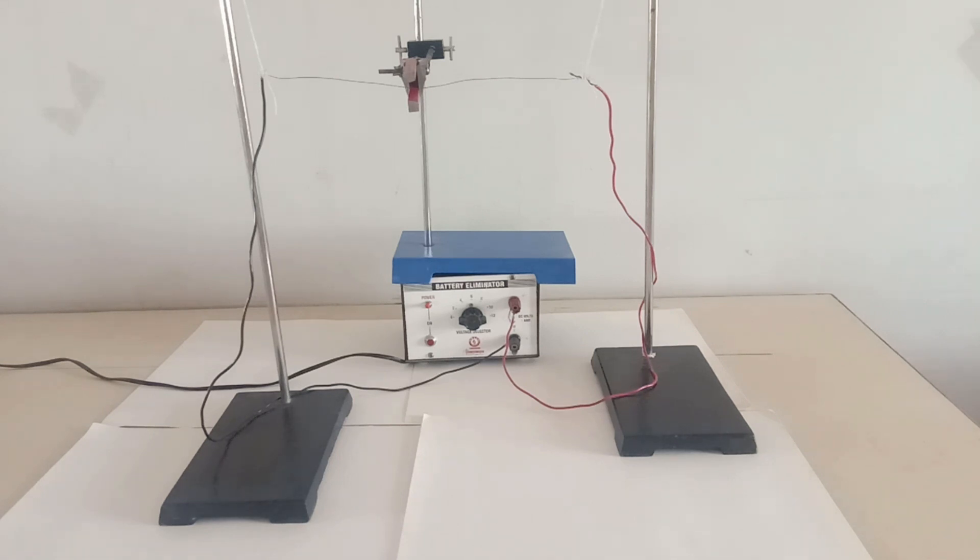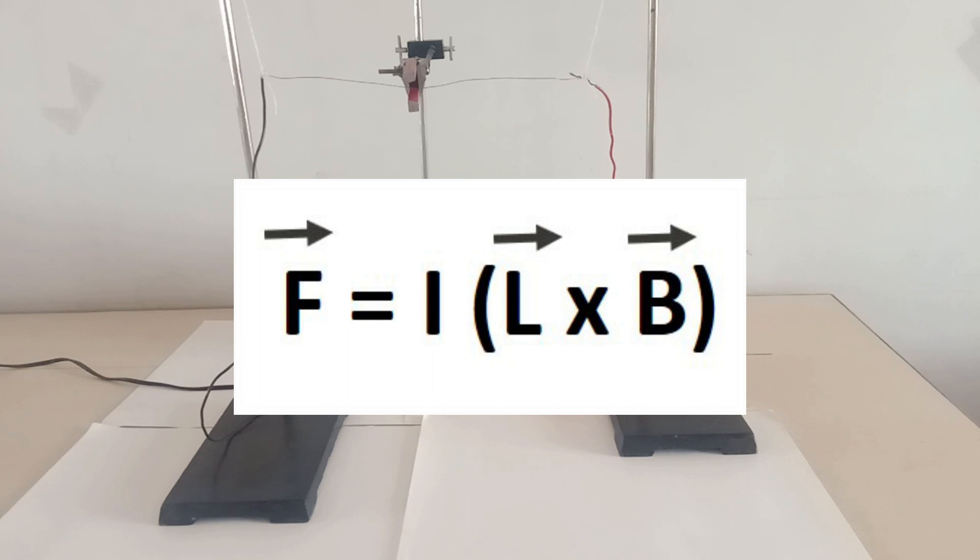Here what I'm going to do is pass electric current through a wire, basically a copper wire placed in a magnetic field, and due to that the wire is going to experience a force. The expression of the force is here in front of you. You can see some vector notations, but since we do not know vector notations in grade 10, we explain this formula with the help of Fleming's left hand rule. Here F is the force, L is the length of the conductor, I is the current, and B is the magnetic field.